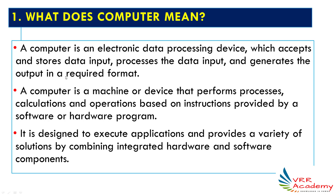So there are four steps: first, getting the input from the user; second, storing the data inside the computer; third, processing the data; and finally, generating the output to the user. This gives us a simple definition — an electronic data processing device, or electronic data processing machine.